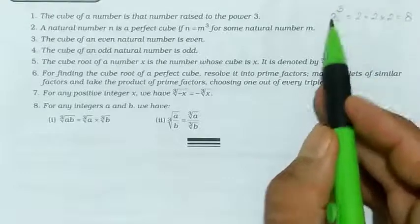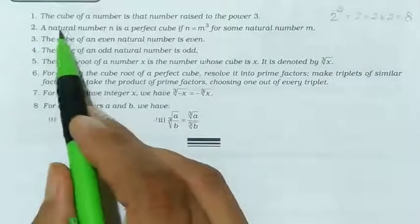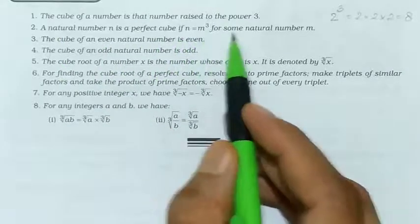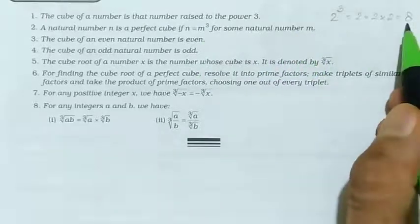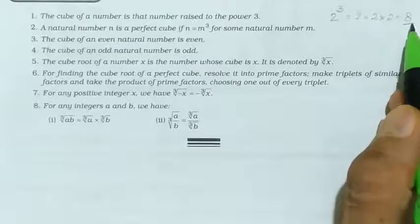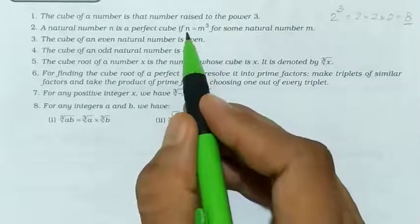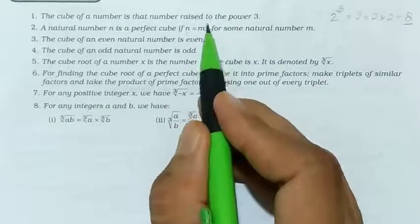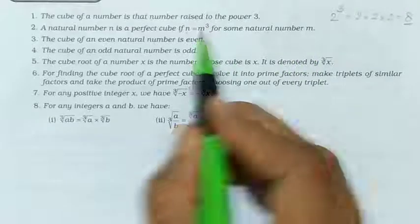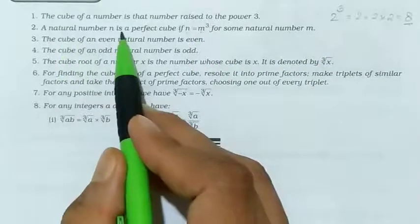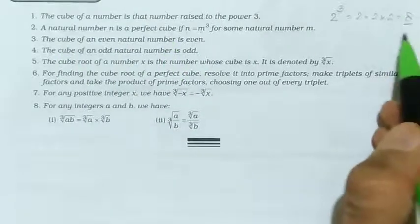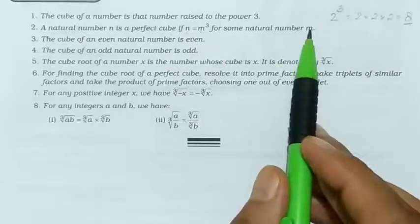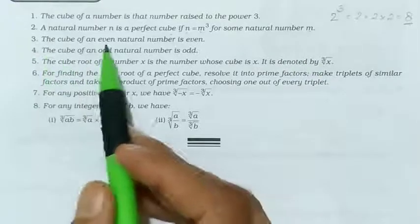You have to write it as a power — not as '23'. The second point: a natural number n is a perfect cube if n equals m cube for some natural number m. For example, 8 is called a perfect cube because we can write 8 as 2 cube, so 8 = 2³ where m is 2, which is a natural number.